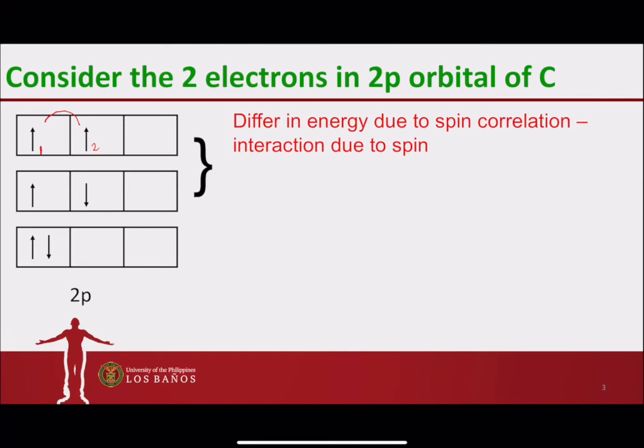Now, electron 2 would be in the first 2p orbital, and electron 1 would be in the second 2p orbital. We count that as one exchange energy difference, or π_e. In the middle arrangement, there is no exchange that will happen because the electrons are in opposite spin.